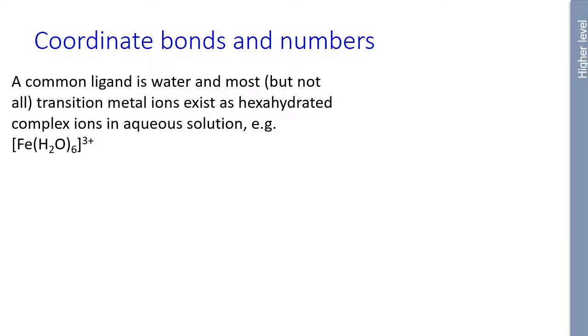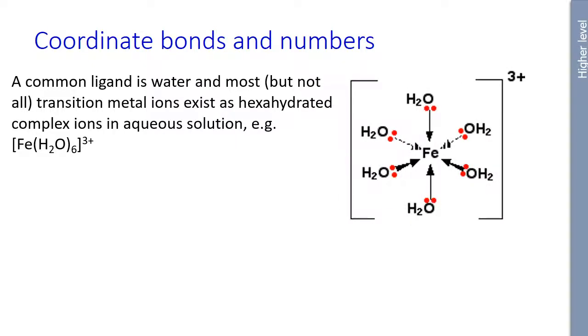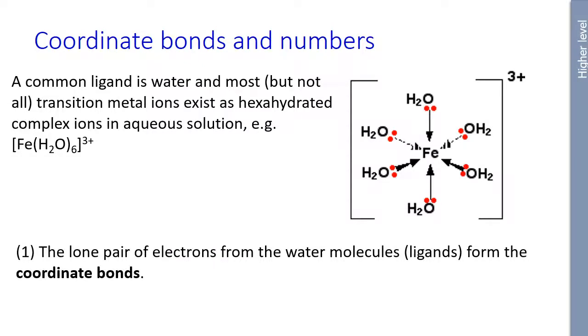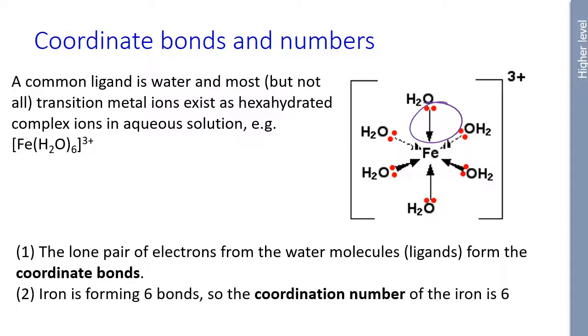Looking at coordination bonds and numbers, a common ligand we see, of course, with a wonderful lone pair, is water. And most, but not all, transition metal ions exist as this hexahydrated complex ion in aqueous solution. So when you look at iron in solution, that brown rusty color, that's actually not just the free ion floating about, it's actually in coordination with six water molecules. That's pretty much what hydration is. And that's the example of that there, in kind of 3D or 2D planar. And the lone pair of electrons of water molecules form these coordinate bonds. So there's the coordinate bonds forming from the lone pairs. And iron is forming six bonds, so the coordination number, therefore, is six.